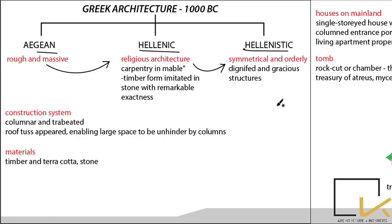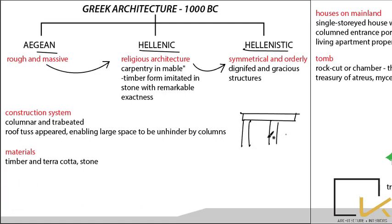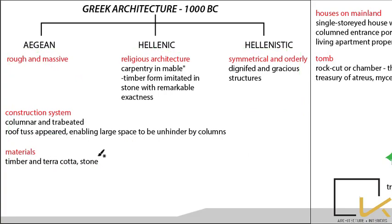The third period, Hellenistic, is symmetrical and orderly — more mature, dignified, and gracious. The construction system used was columnar and trabeated form, meaning a roof slab supported by columns, similar to the hypostyle hall in Egyptian architecture. Roof trusses were just starting to appear in Greek architecture but were mainly developed during early Christian architecture. Materials used were timber, terracotta, and stone.